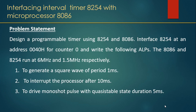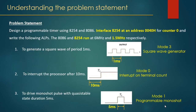We'll take an example problem statement to understand all the aspects — this is the type of question typically asked in exams. The problem statement is: design a programmable timer using 8254 and 8086, interface 8254 at address 0040H for counter 0. The 8086 and 8254 run at 6 MHz and 1.5 MHz respectively. The tasks are: generate a square wave of period 1 millisecond, interrupt the processor after 10 milliseconds, and drive a monoshot pulse with quasi-stable state duration of 5 milliseconds.